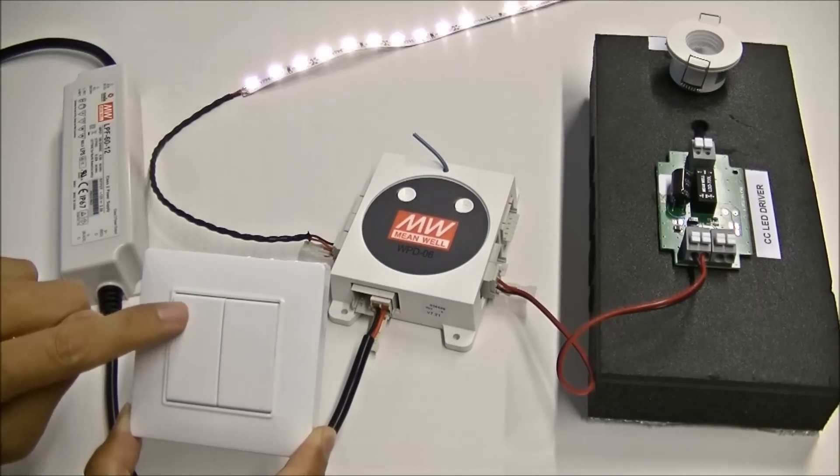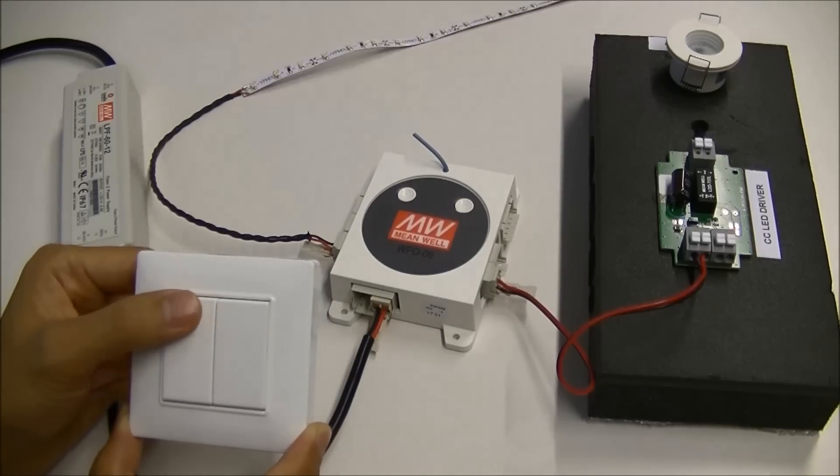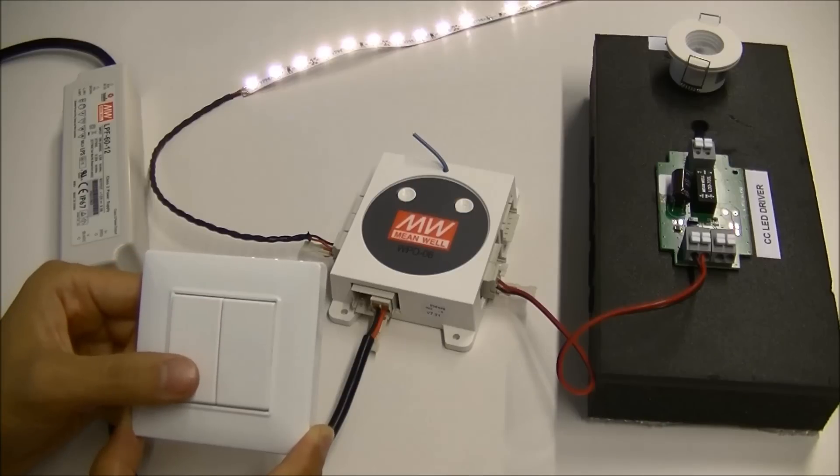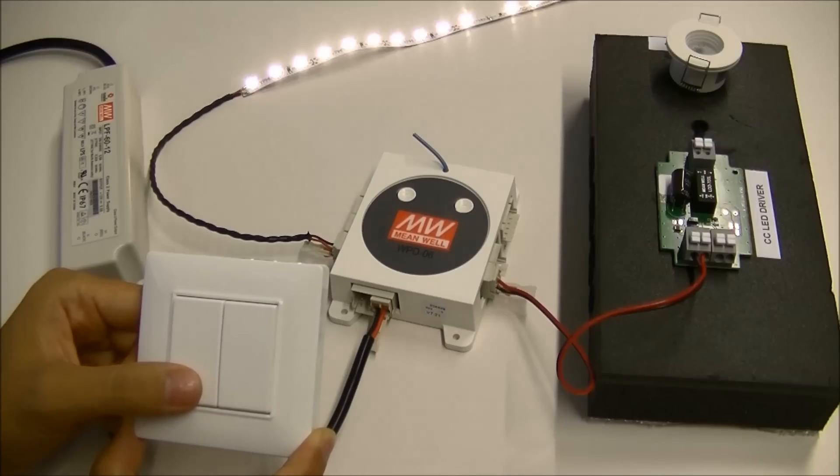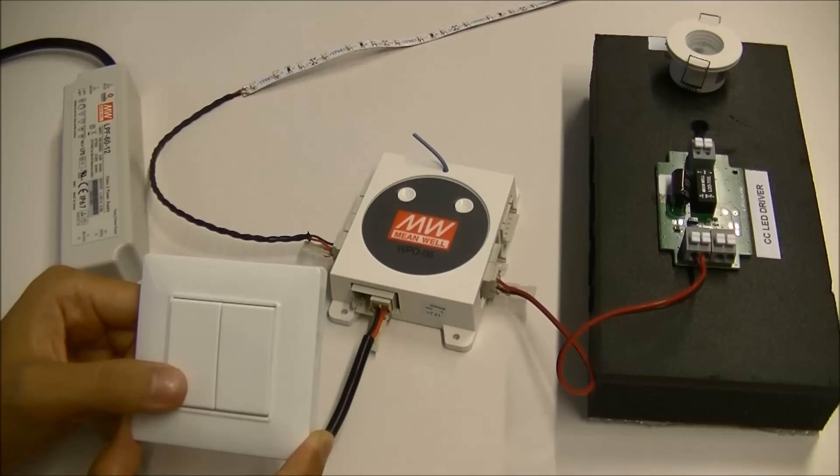After press, the LED is continuously on, meaning the turn on command is paired with the switch you just pressed. Press another switch to set it as turn off command. Now, the LED is blinking again, meaning the channel 1 is finished the pairing and ready for another switch to pair if necessary.